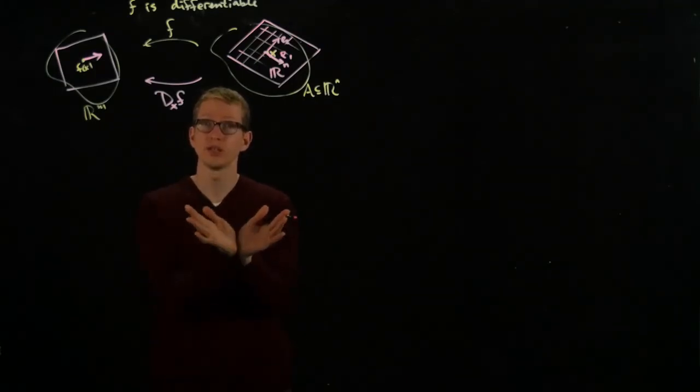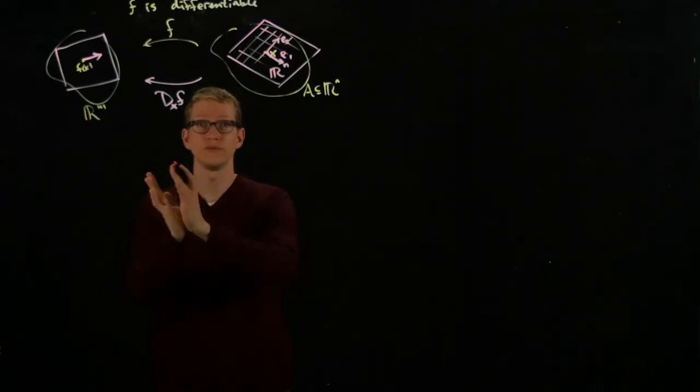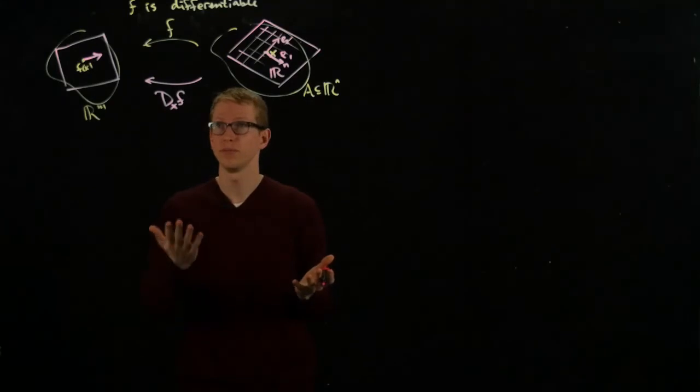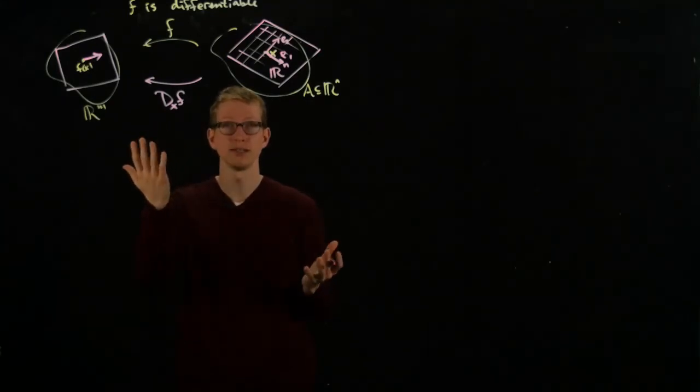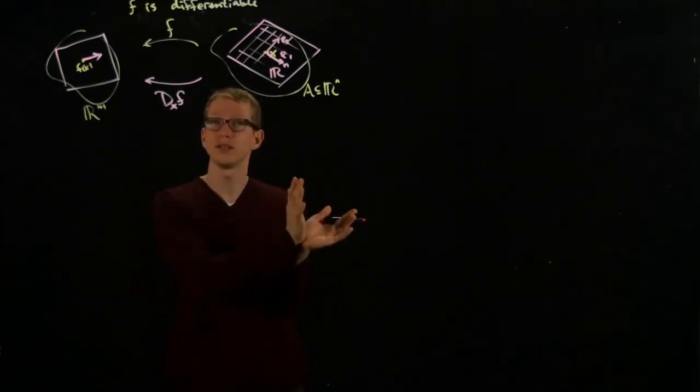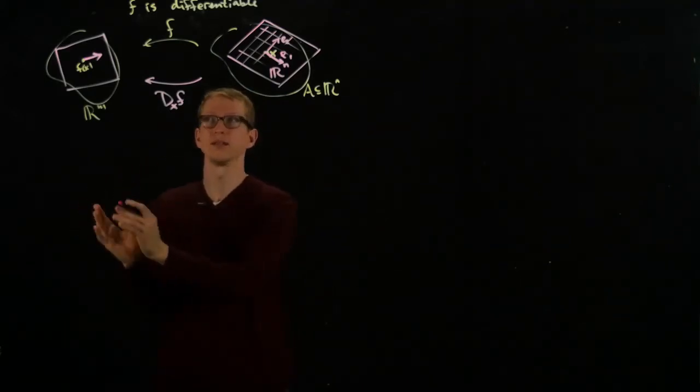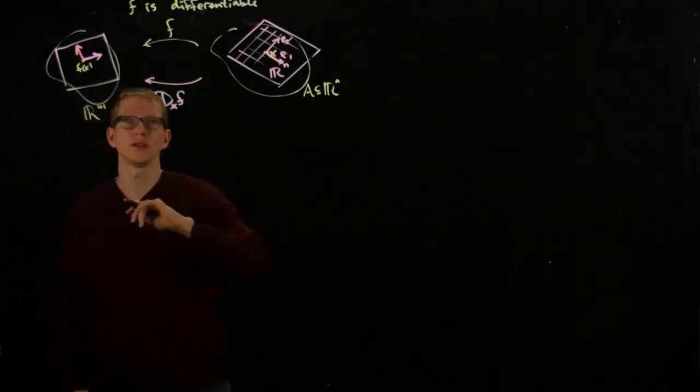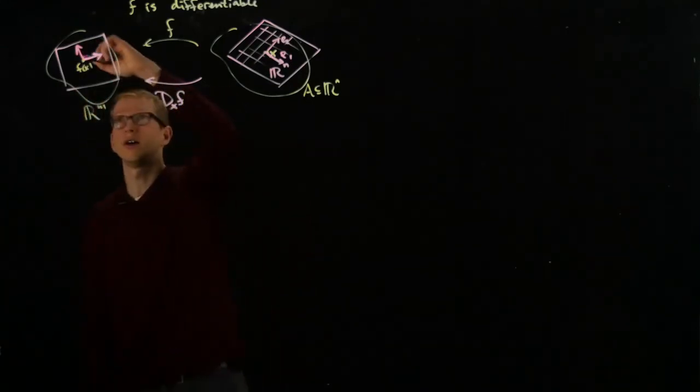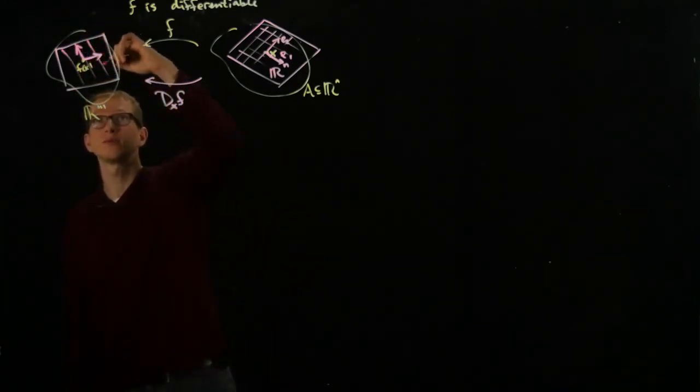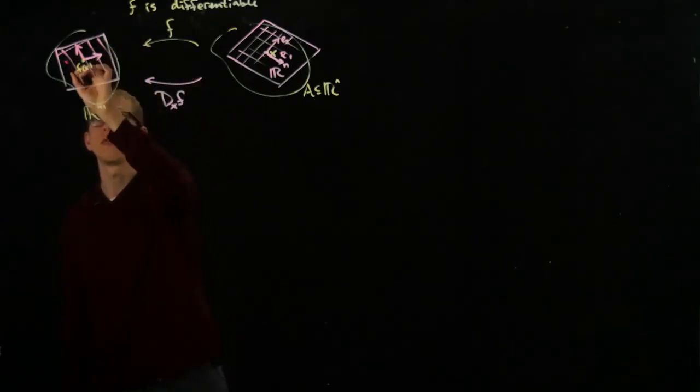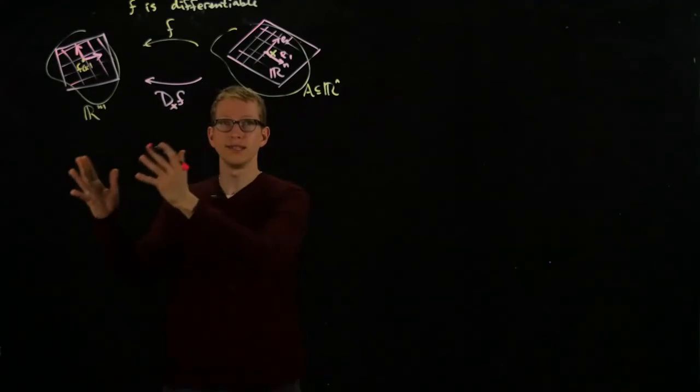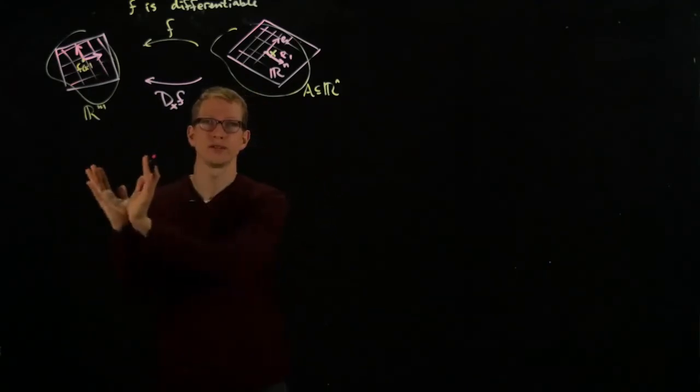What happens to these unit vectors as I apply this differential to them? Well, as any linear transformation, it sort of moves these vectors around. And as long as the determinant of this linear transformation is not zero, then two linearly independent vectors remain linearly independent. So I have some new vectors here, and I get some sort of a new coordinate system on the image based on the image of these two vectors.